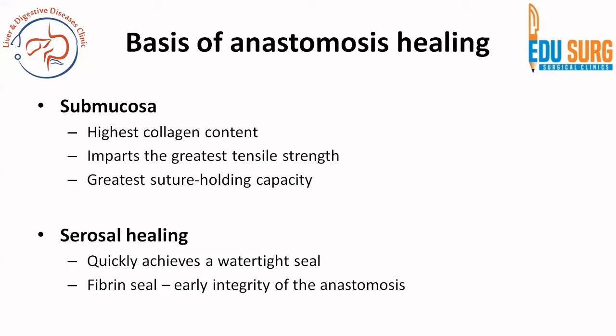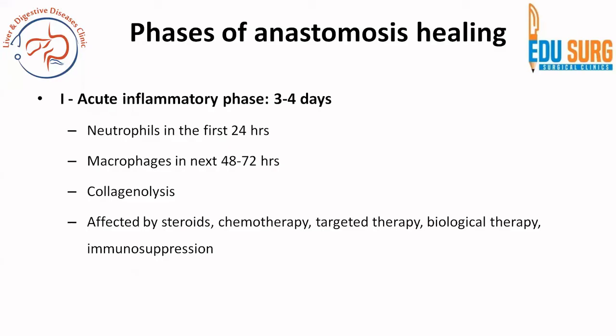The submucosa has the highest tensile strength and gives the greatest suture-holding capacity to the anastomosis. On the other hand, serosa healing is fairly quick and achieves a watertight seal very quickly due to a fibrin seal, leading to early integrity of the anastomosis. The phases of anastomosis healing are like phases of wound healing. The first is the acute inflammatory phase, lasting three to four days. Neutrophils come in the first 24 hours, then macrophages, followed by collagenolysis. This phase is commonly affected by chemotherapy, steroids, targeted therapy, biological therapy, and immunosuppression.